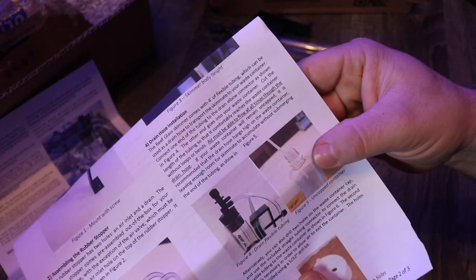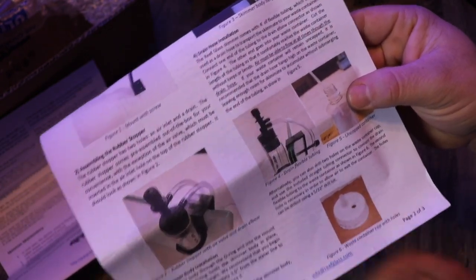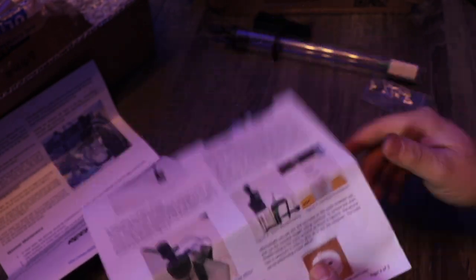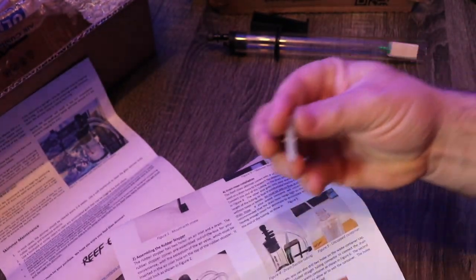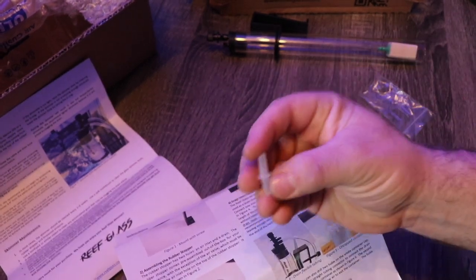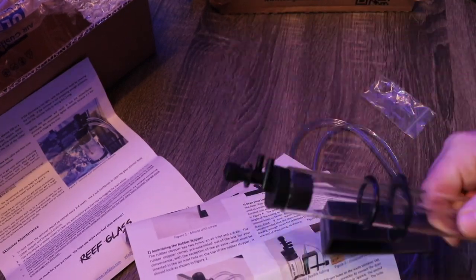And right here in the directions, it shows you to use a bottle. Take the cap, drill a hole in it. One of the holes is going to be to allow air to get out of it, and the other one is going to be for this little connection right here, so it gives a solid point of contact for the airline tubing to leave that elbow.